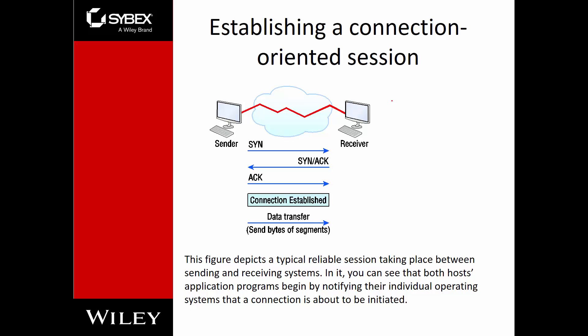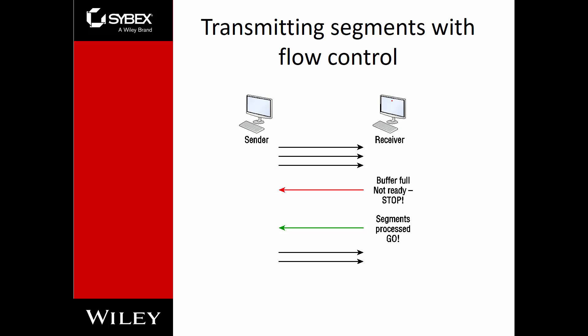Connection-oriented means guaranteed delivery, meaning we have to have some way of doing flow control and error correction. We can send mass amounts of bits, and the receiver, if it is getting full, will be able to send a stop bit and a go bit, so that we know when we can start sending more data.